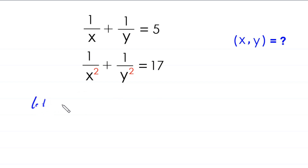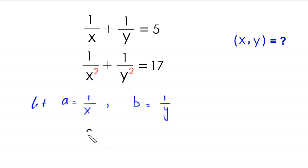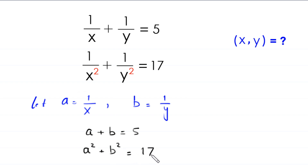First, we suppose that a is equal to 1 over x and b is equal to 1 over y. So the first equation becomes a plus b is equal to 5 — call this equation 1. The second equation becomes a squared plus b squared is equal to 17 — call this equation 2.